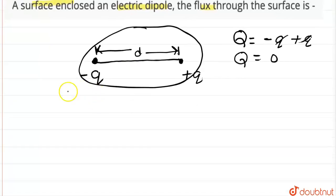Now, according to Gauss theorem, the flux through a surface is equal to the net charge enclosed divided by epsilon zero.